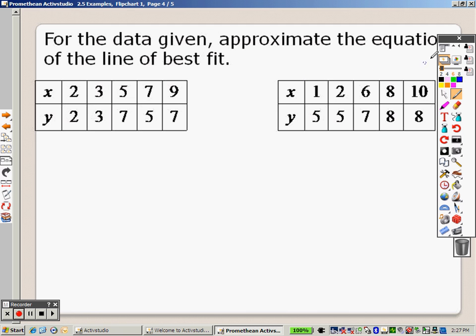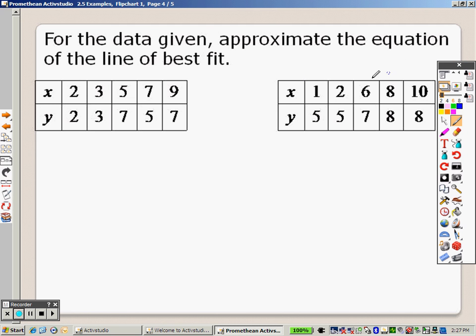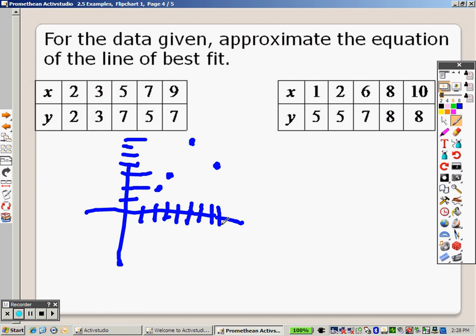Okay, best-fitting line and approximating equations for best-fitting lines. Here's what we're going to look at. You could do this by graphing all these points: over 2, up 2; over 3, up 3; over 5, up 7; over 7, up 5; over 9, up 7. You could try your best to draw a line straight through as many as you can, pick a point on the line and do all that, but let's face it.